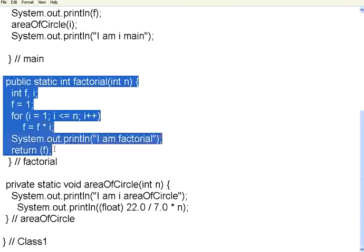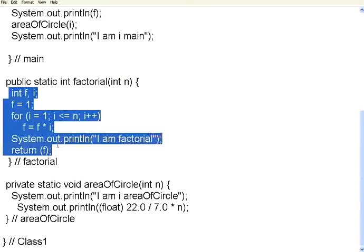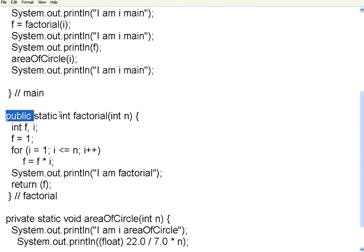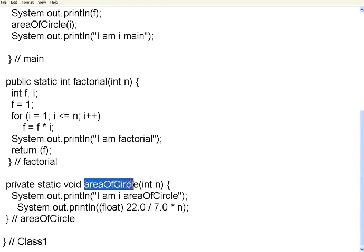In the factorial method, I take in a parameter, calculate the factorial, print it, and return f. Access modifier public means when we declare another class, other methods in other classes can directly access this method. When you say private, area of circle cannot be accessed from outside — I will show you that in a few minutes.